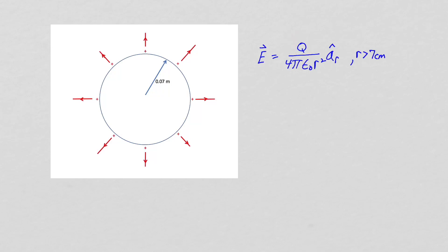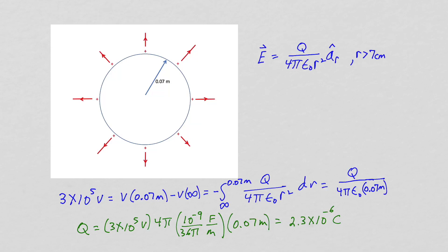With a charge Q on the sphere, this is the form of the electric field intensity outside our Van de Graaff generator. Assuming there is nothing near the sphere, the potential of the sphere is the potential difference between the sphere and infinity. That works out to be the charge on the sphere over 4π times the permittivity of free space times the radius of our sphere, 0.07 meters. We can then solve for the charge on the sphere and we find that it is 2.3 microcoulombs.